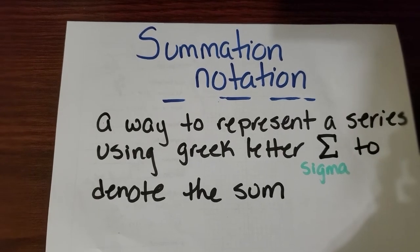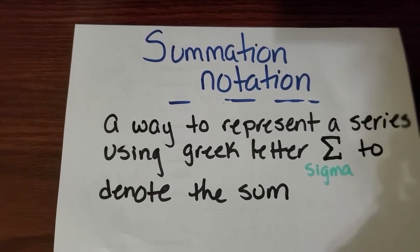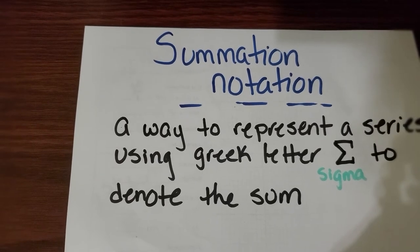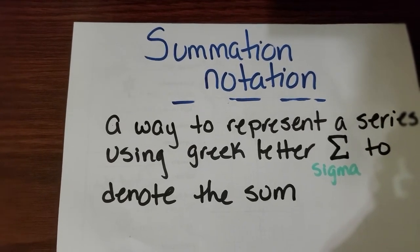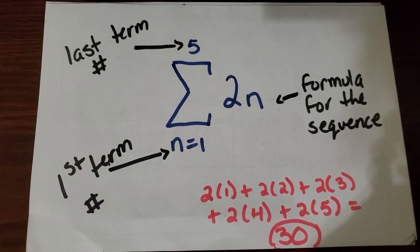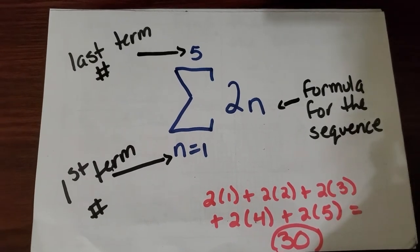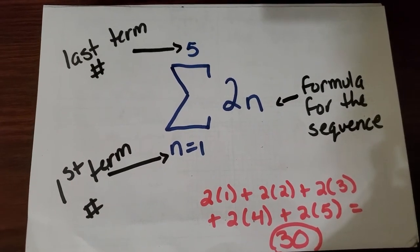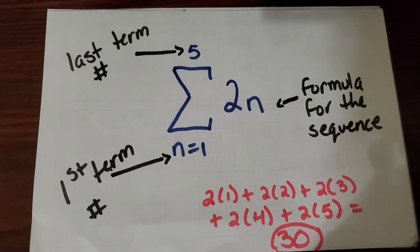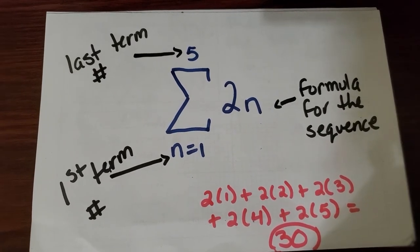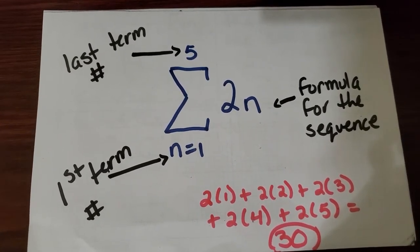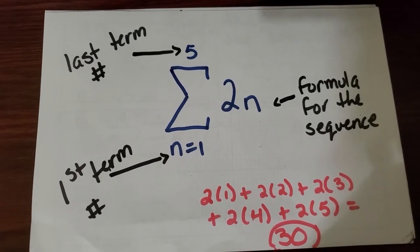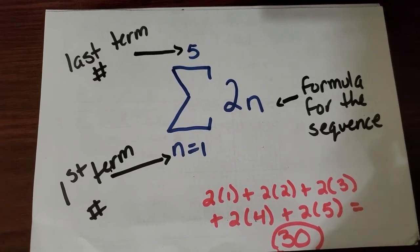Summation notation is a way to represent a series using Greek letter sigma to denote the sum. If we look at this particular example, we see the Greek letter sigma. We see a 2n on top of the Greek letter is the number 5, and below the Greek letter is n equals 1.